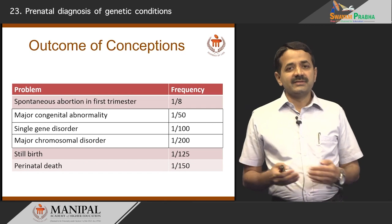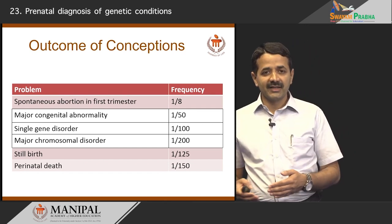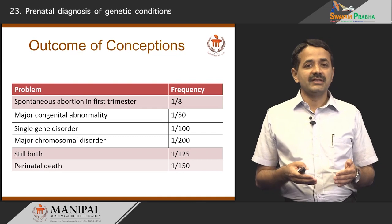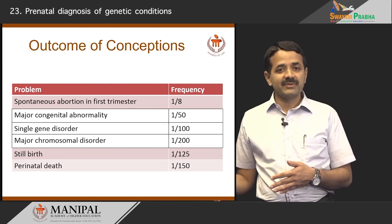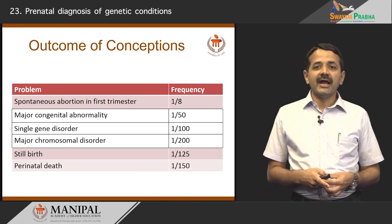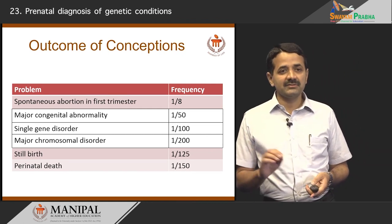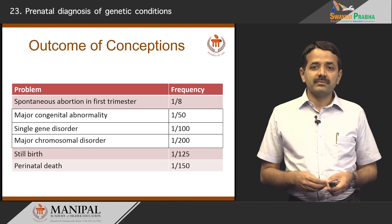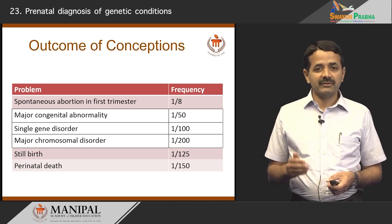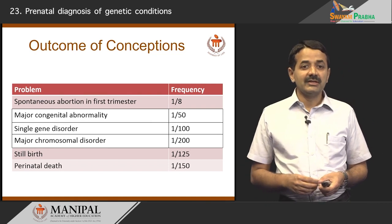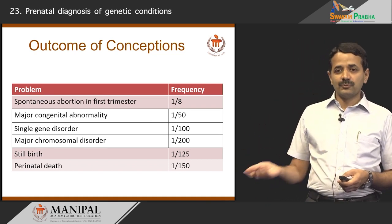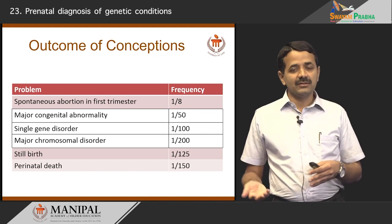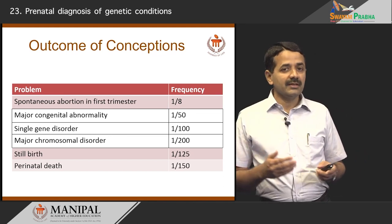If you see conceptions, everybody wishes to have a normal baby at the end of 9 months, but this does not always happen. In some situations, 1 in 8, sometimes 1 in 6, pregnancies end up in abortions, and 1 in 50 — that is 2 to 3 percent — of births have a major congenital abnormality. Some pregnancies are affected with single gene disorders, called Mendelian or monogenic disorders. Major chromosomal abnormality can be present in 1 in 200, and some pregnancies end up in stillbirths or perinatal deaths.